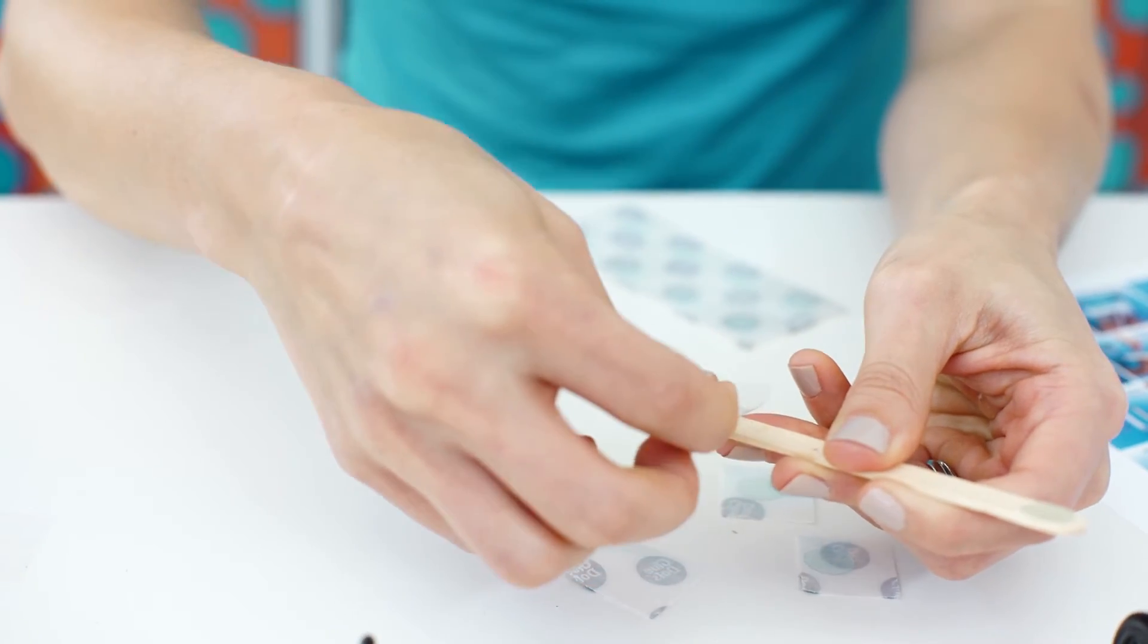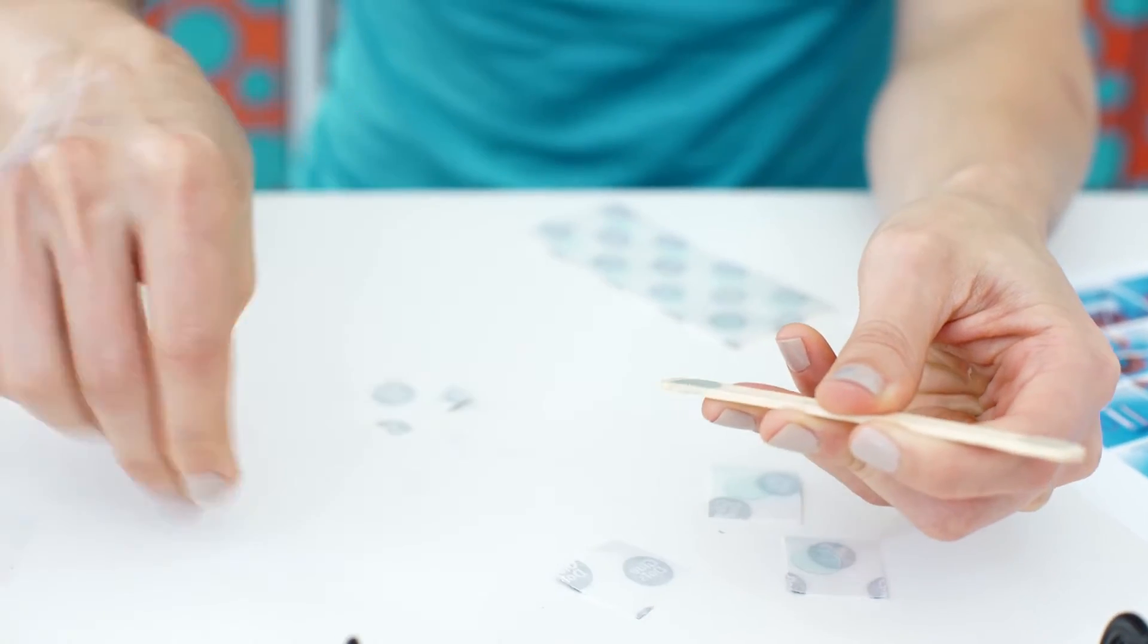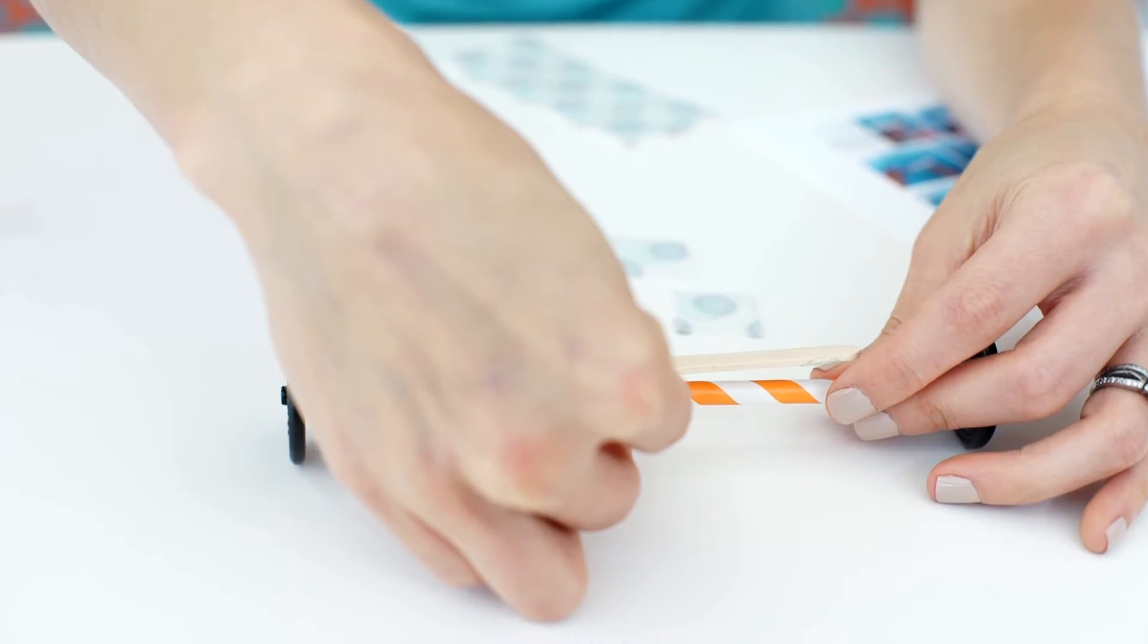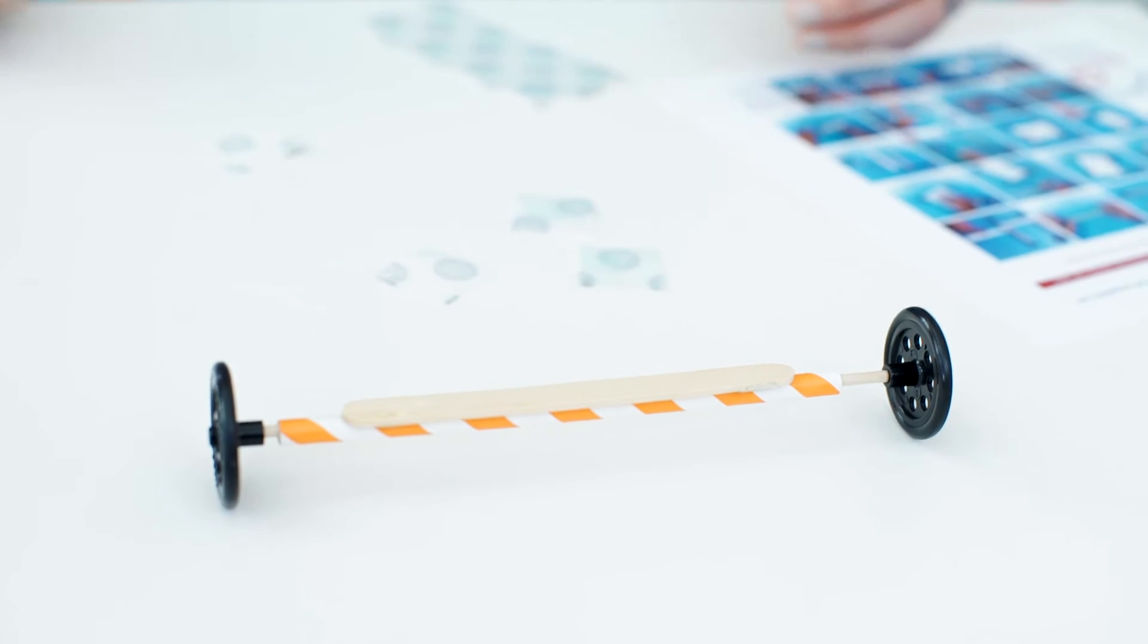Take your wood stick and put one glue dot on each end and then place it on the straw. You're going to repeat steps one through three to make your second set of wheels.